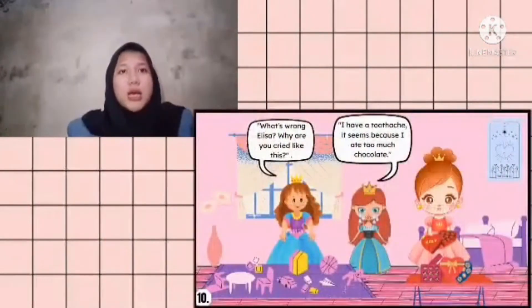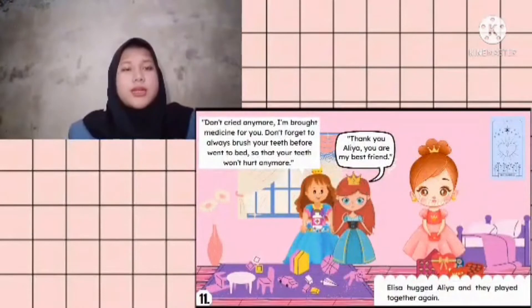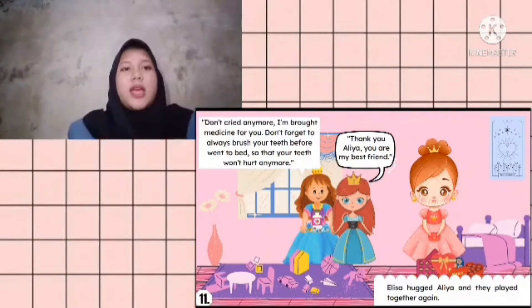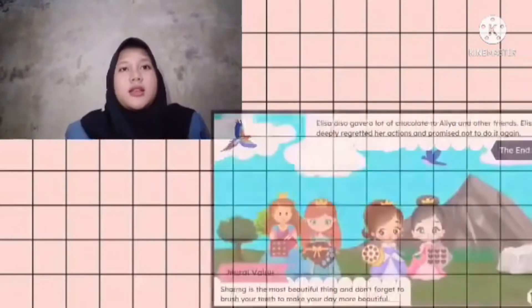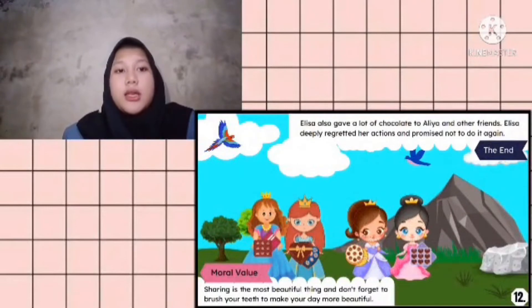What's wrong, Elisa? Why are you crying like this? I have a toothache - it seems because I ate too much chocolate, said Elisa. Don't cry anymore, I brought medicine for you. Don't forget to always brush your teeth before going to bed so that your teeth won't hurt anymore. Thank you Alia, you are my best friend! Elisa hugged Alia and they played together again. Elisa also gave a lot of chocolate to Alia and other friends. Elisa deeply regretted her actions and promised not to do it again.